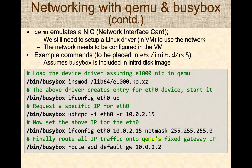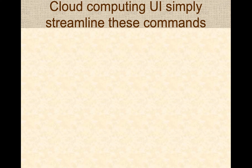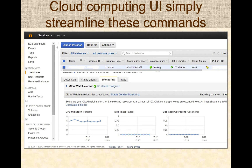Once it's set up, the network QEMU starts up and runs. When working on cloud computing infrastructures, they usually provide user interfaces that streamline running all of these commands. They may not use QEMU — they might use different types of virtualization hypervisors — but they all run these kinds of commands at the command line, and web UIs like VirtualBox streamline running these commands on behalf of the user.